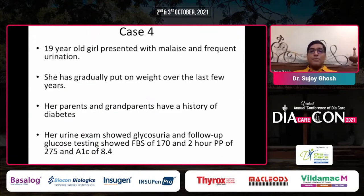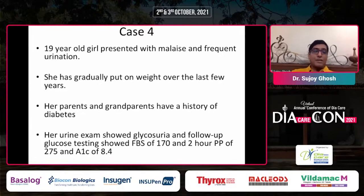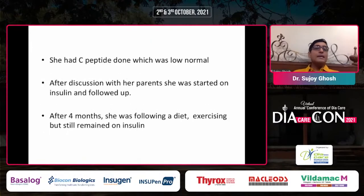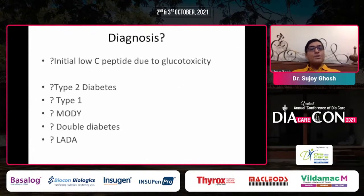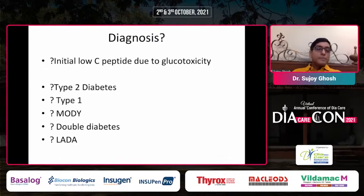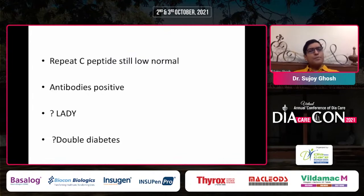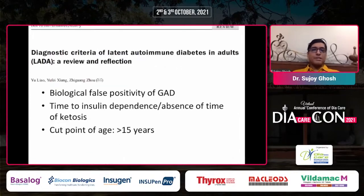Case 4: A 19-year-old girl with malaise and frequent urination had gradually put on weight. Parents and grandparents have diabetes. Fasting and postprandial sugars were high, A1C was high, C-peptide was lowish normal. She was started on insulin. After 4 months she was doing well but remained on insulin. The differential included glucotoxicity, type 2, type 1 with preserved insulin secretion, LADA, double diabetes, or MODY. On repeat, C-peptide was still low-normal and antibodies were positive — suggesting LADA. The diagnosis of LADA is ultimately made retrospectively when the individual becomes insulin-dependent very quickly.